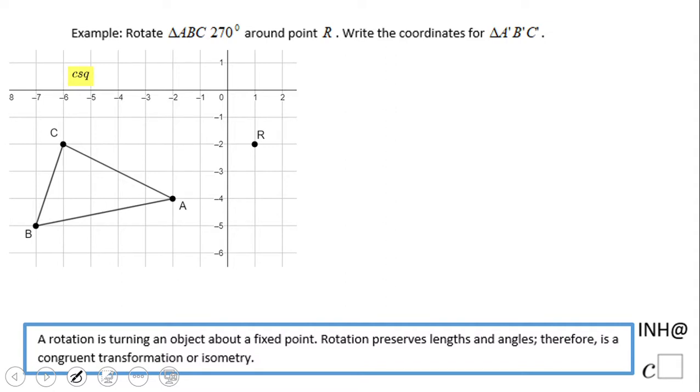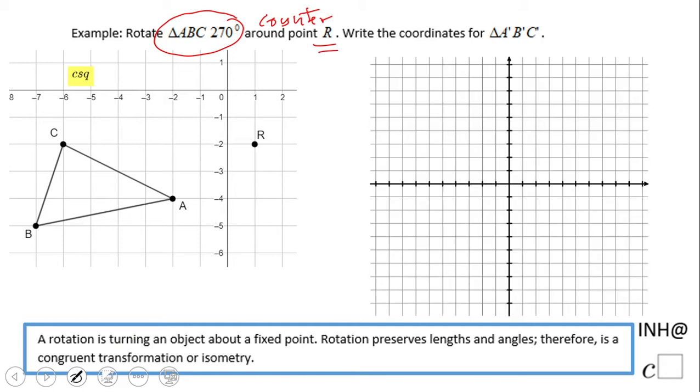Welcome, welcome here on I Need Help. In this example we're going to look at how to rotate a triangle 270 degrees counterclockwise around point R. For that reason I'm going to use some graph paper, then I'm going to plot the points.